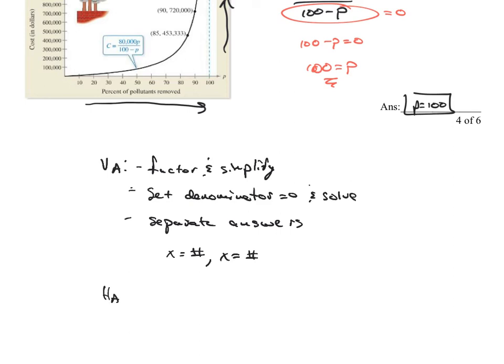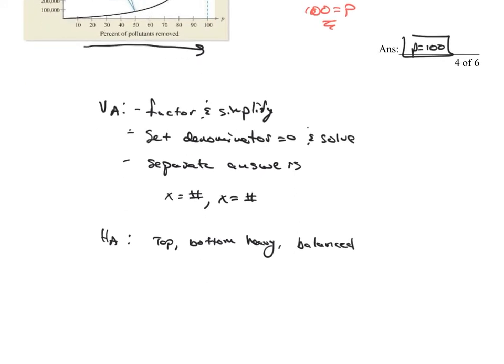For horizontal asymptotes, you want to look at top-heavy, bottom-heavy, and balanced. Again, if it's top-heavy, we know that the answer is none. If it's bottom-heavy, we know that the answer is y equals zero. And if it's balanced, we know the answer is y equals a over b where a over b is the ratio of the leading coefficients.